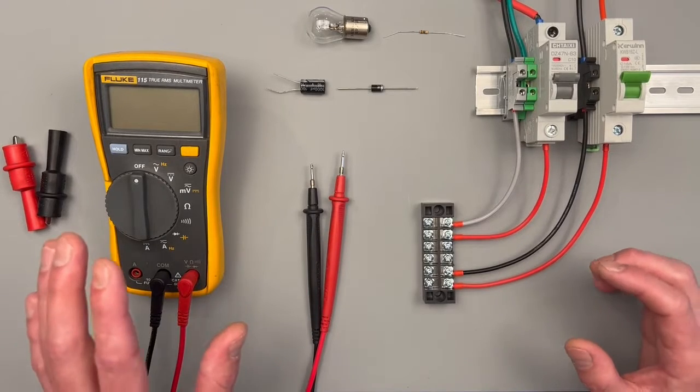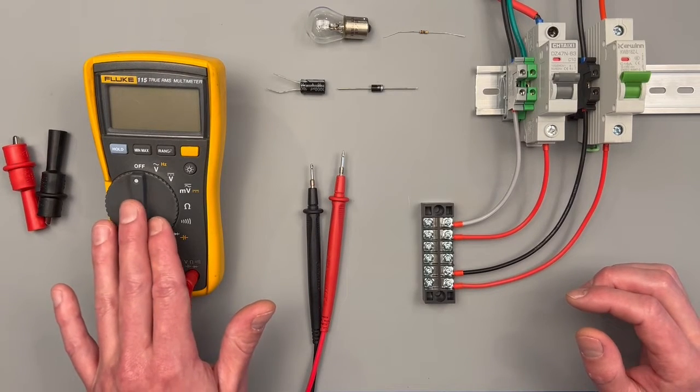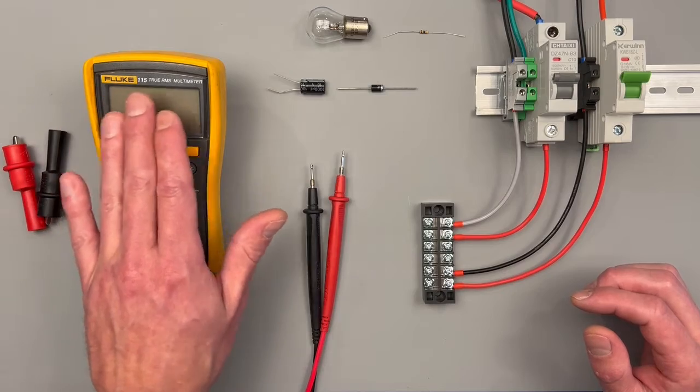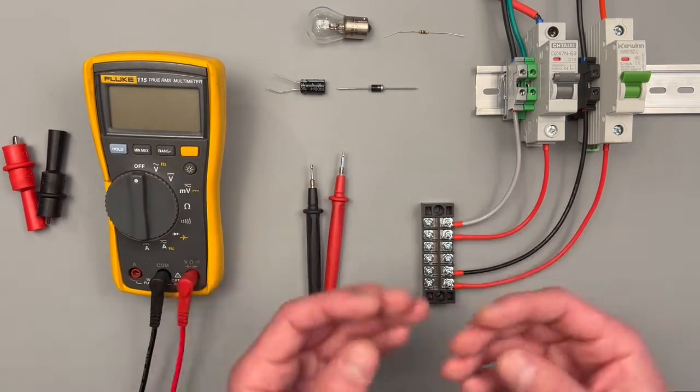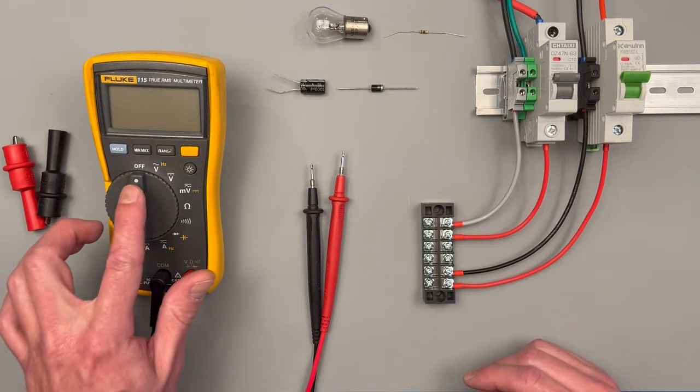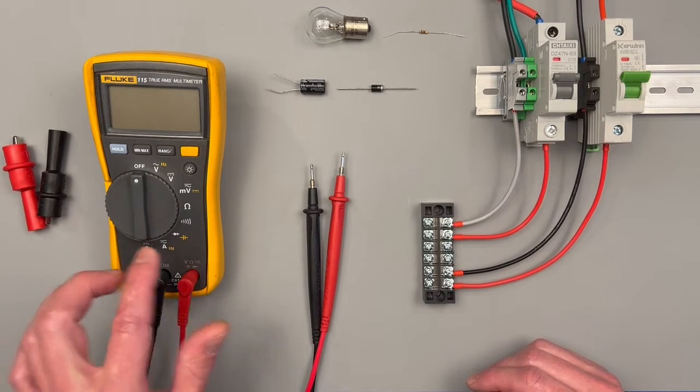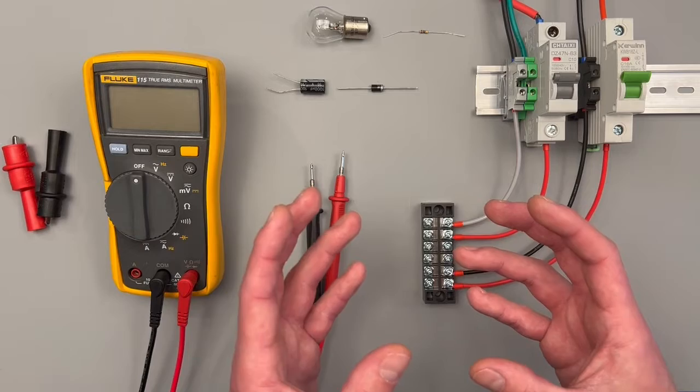Welcome to the channel everybody. Today we're going to be going over every setting on the rotary switch of your Fluke 115 meter. All of your technical specifications are going to be in your manual. That's not going to be covered here today. Really just every setting that this little knob turns to, we want to go over and demonstrate.